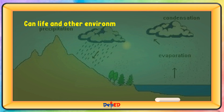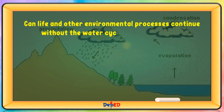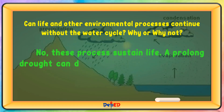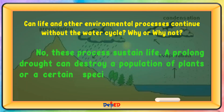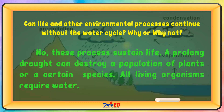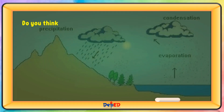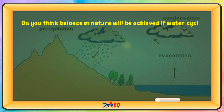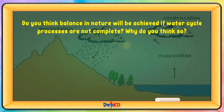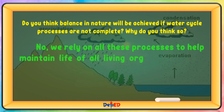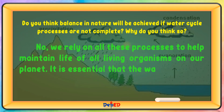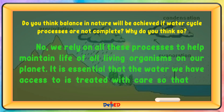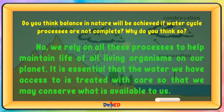Can life and other environmental processes continue without the water cycle? No — this process sustains life. A prolonged drought can destroy a population of plants or a certain species. Do you think balance in nature will be achieved if water cycle processes are not complete? No. We rely on all these processes to maintain life of all living organisms. It is essential that the water we have access to is treated with care so that we may conserve what is available to us.